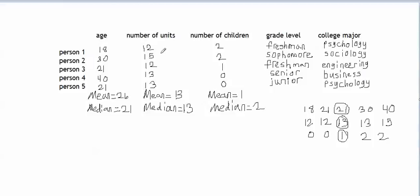It looks like in this column of data, the mean and the median came out to the same number, and in this column of data, the mean and the median came out to the same number. That can happen sometimes.